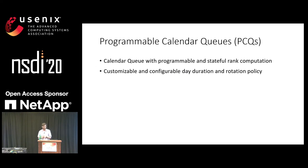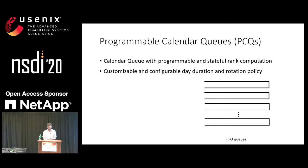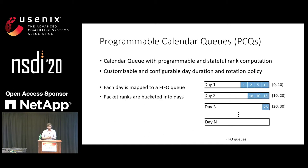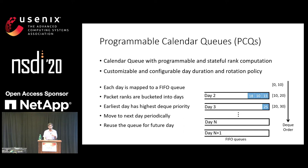We can address this using programmable calendar queues, which are queues combined with a programmable and stateful rank computation, along with a configurable day duration and a rotation policy. We have some number of FIFO queues in our traffic manager, and we map each day of our calendar queue to a FIFO queue. We bucketize packet ranks into individual days — for example, day one contains packet ranks 0 to 10, day two ranks 10 to 20, and so on. We dequeue packets from the earliest day first by ordering them in strict priority. As all packets of a particular queue are drained, we move on to the next day, and then reuse that queue for a future day.